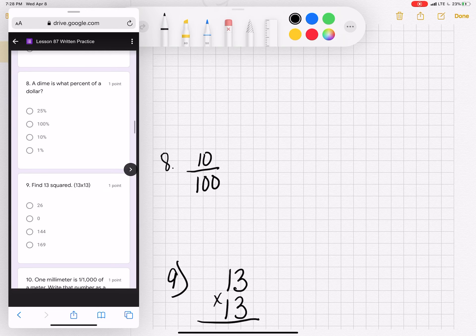Number 8. A dime is what percent of a dollar? And this is a perfect problem because I know if I have 10 cents out of 100 cents, that's my percentage. 10%. Any fraction on top of 100, you can just write it as a percent. The numerator can be your percentage.